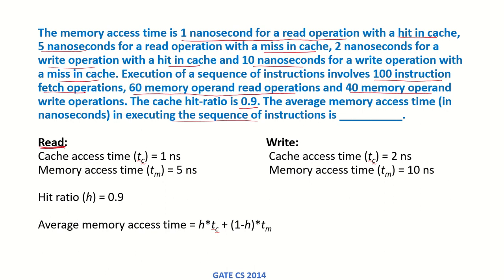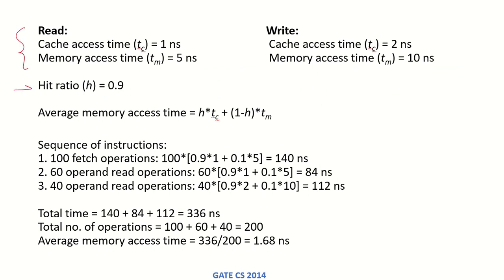For a read operation, the cache access time is 1 nanosecond if it is a hit, and the memory access time when there is a cache miss is 5 nanoseconds. For a write operation, cache access time is 2 nanoseconds and memory access time when there is a miss is 10 nanoseconds. The hit ratio is 0.9. The average memory access time is given by: hit ratio × time to access cache + (1 - h) × time to access main memory.